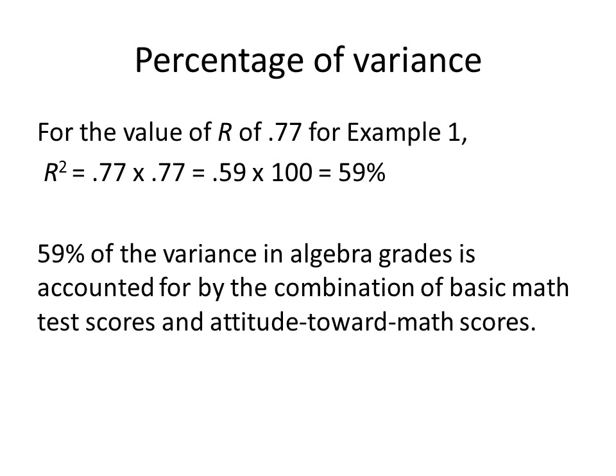From section 14, the coefficient of determination for the Pearson R is calculated by squaring R. Multiplying R squared by 100% gives the percentage of variance on one variable accounted for by the other variable — and this holds true also for the multiple correlation coefficient. For R equal to 0.77, R squared equals 0.77 times 0.77, which equals 0.59. Multiplying 0.59 by 100% indicates that 59% of the variance in algebra grades is accounted for by the combination of basic math test scores and attitude toward math scores.